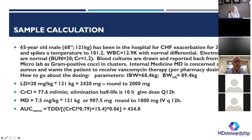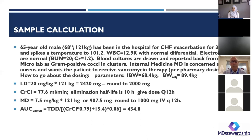Alternatively for the obese patient, you could give a dose every 24 hours — instead of 7.5 mg/kg, give 15 mg/kg, so 2,000 milligrams once daily. This would provide essentially the same AUC depending on your calculations.